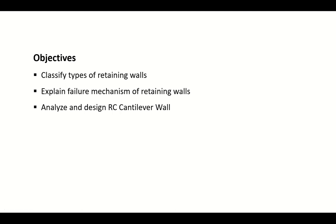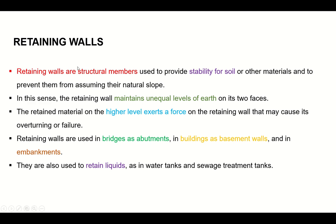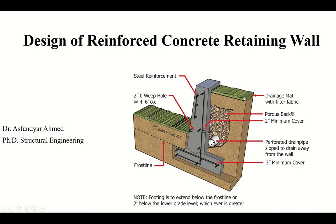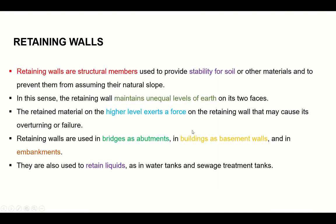The objectives of this lecture are: to classify types of retaining walls, to explain the failure mechanisms of retaining walls, and to analyze and design an RC cantilever wall. Retaining walls are structural members used to provide stability for soil or other materials and to prevent them from assuming their natural slope. The retained material on the higher level exerts a force on the retaining wall that may cause its overturning or failure, so we have to consider certain factors that will be discussed later.